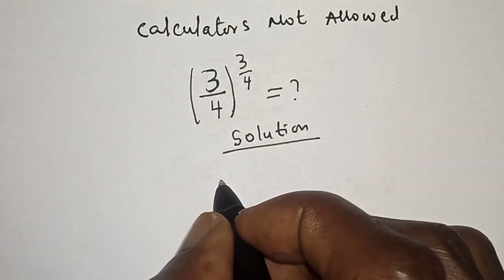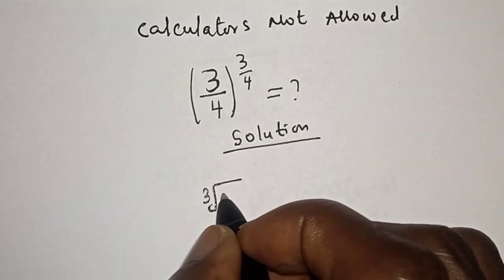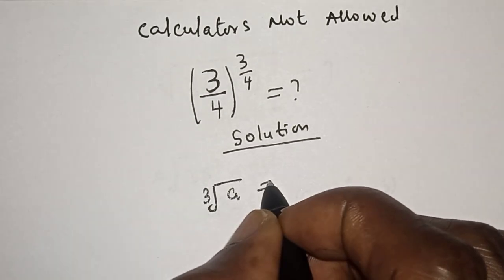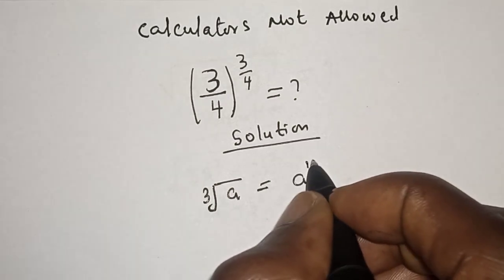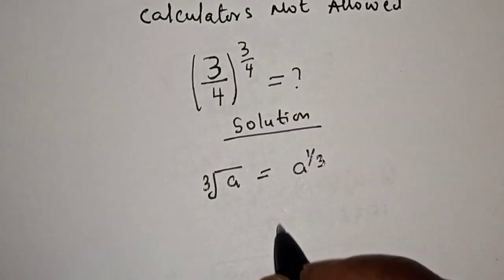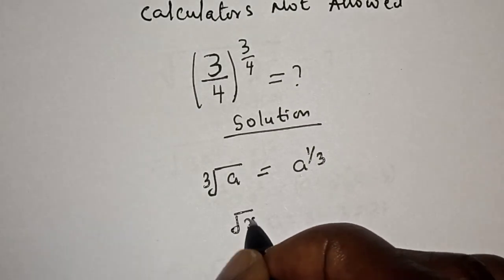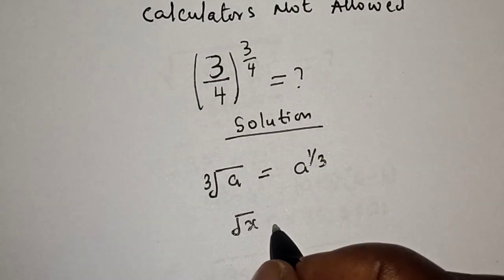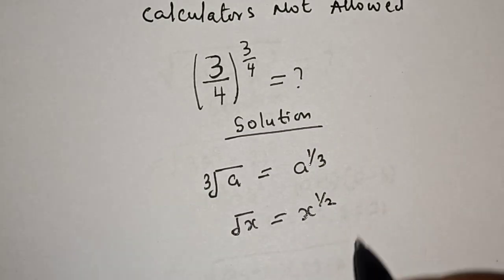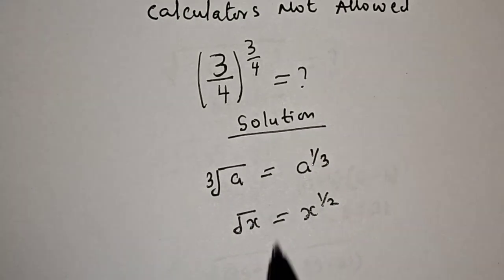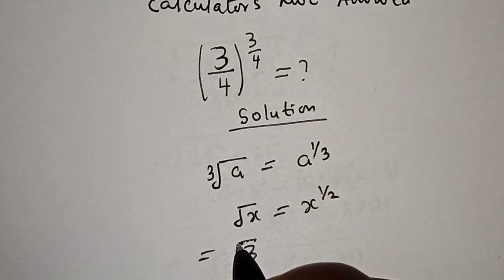Solution. We have 3 over 4, all raised to power 3 over 4. Take note that if you have the k-th root of a, this is equal to a raised to power 1 over k. Also, if you have the square root of x, this is equal to x raised to power 1 over 2. Therefore, this can be written as the 4th root of...